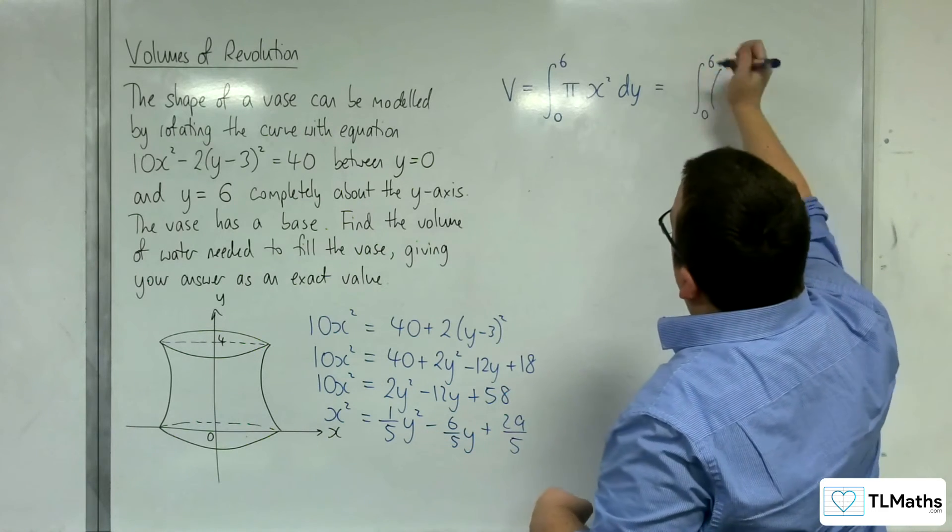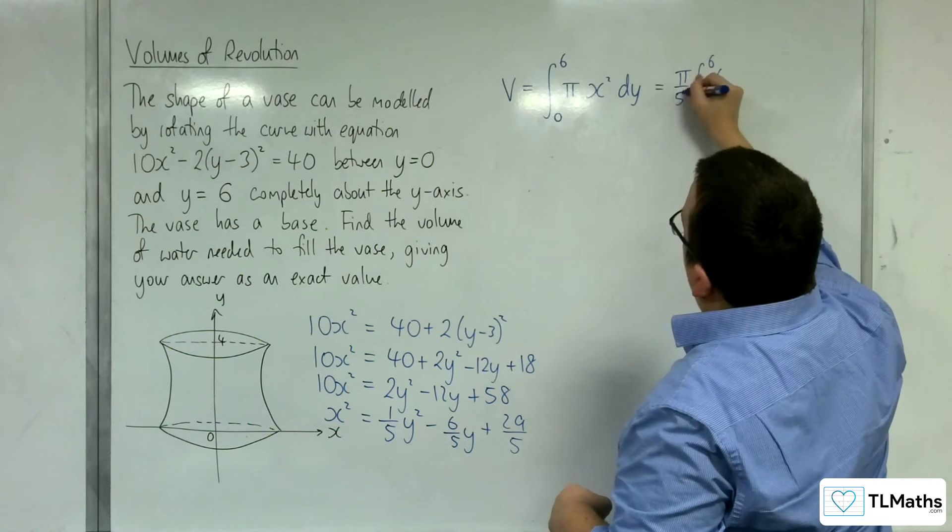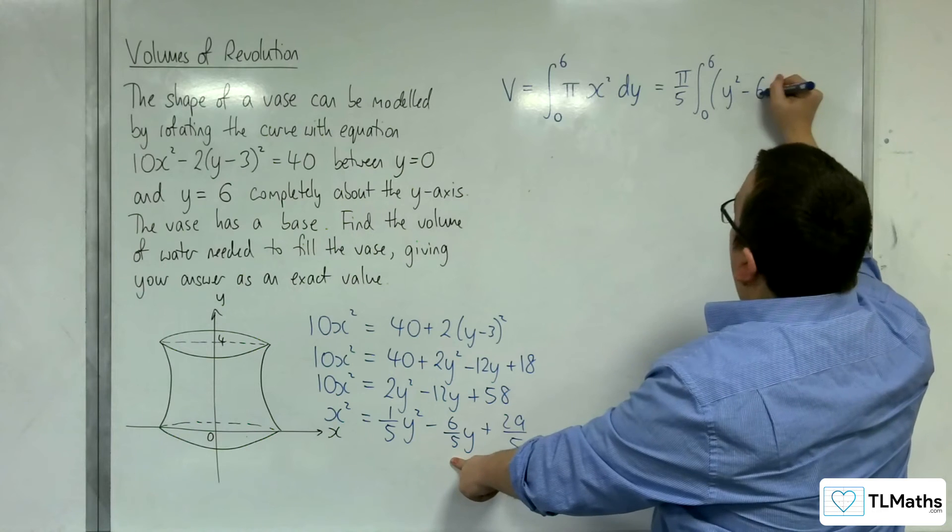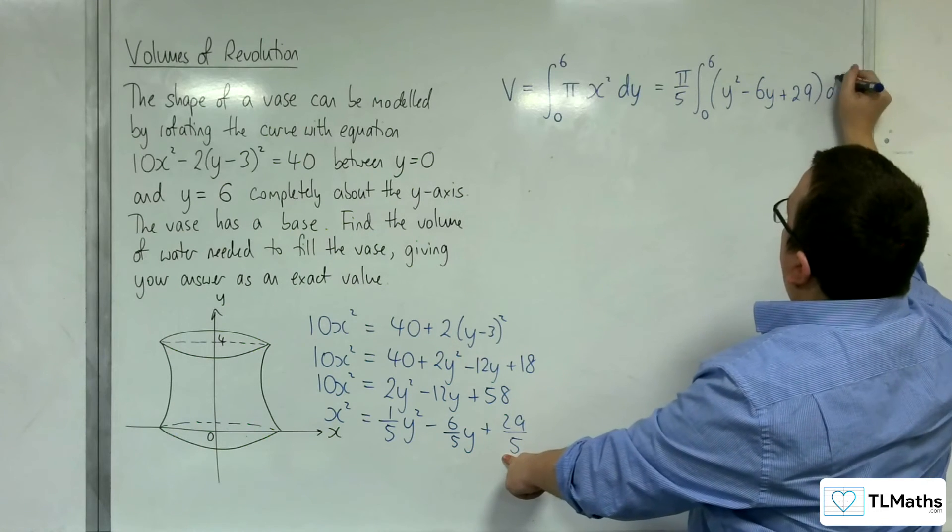Let's make our lives a little bit easier for ourselves. I'm going to bring out the fifth, and I'm going to have y² - 6y + 29 dy.